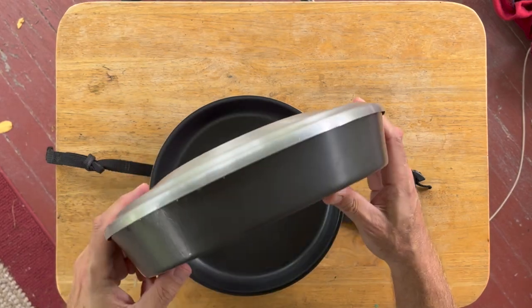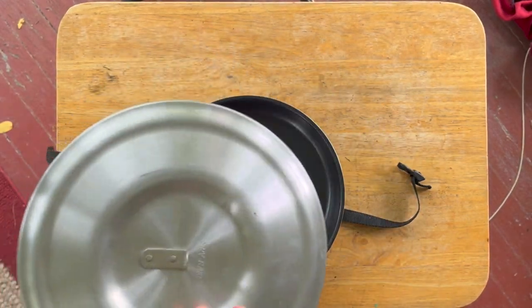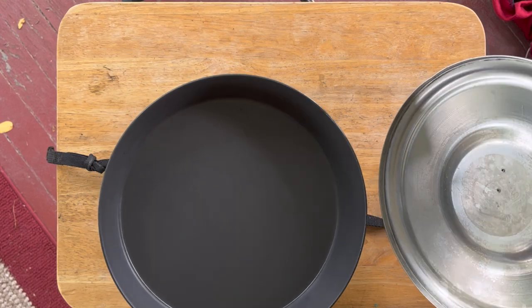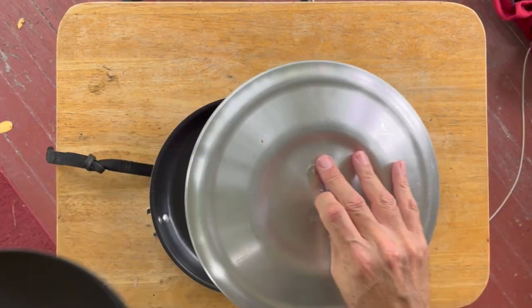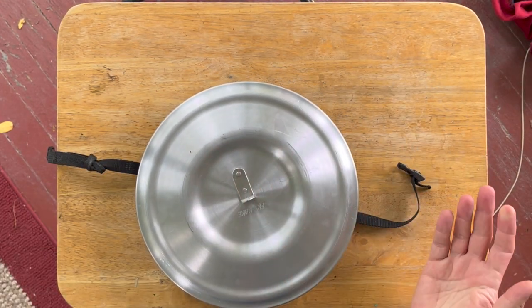So I do want to show you this. This is my fry bake. I use this as well. This is basically a Dutch oven that weighs nothing and is perfect for overlanding.